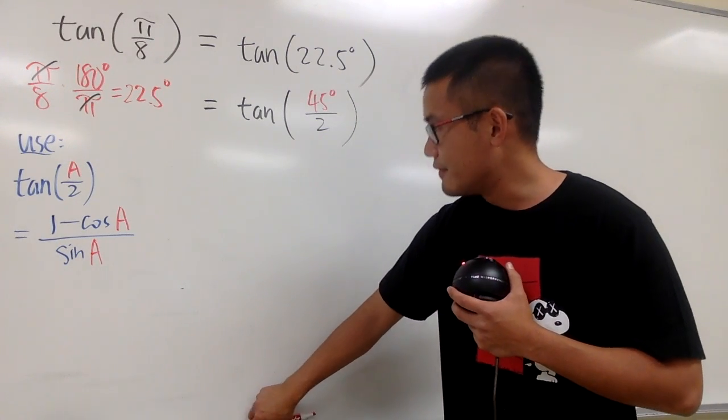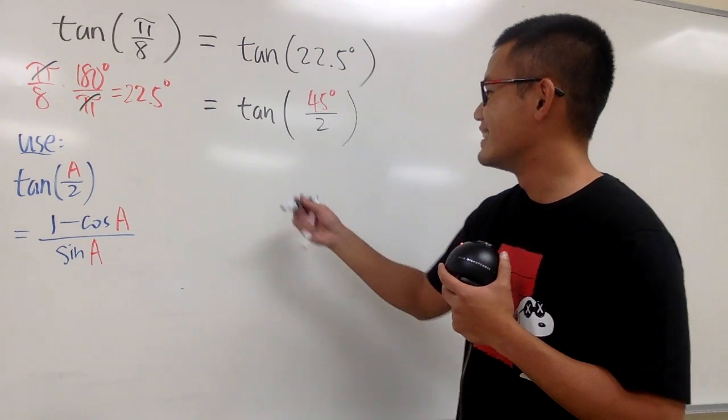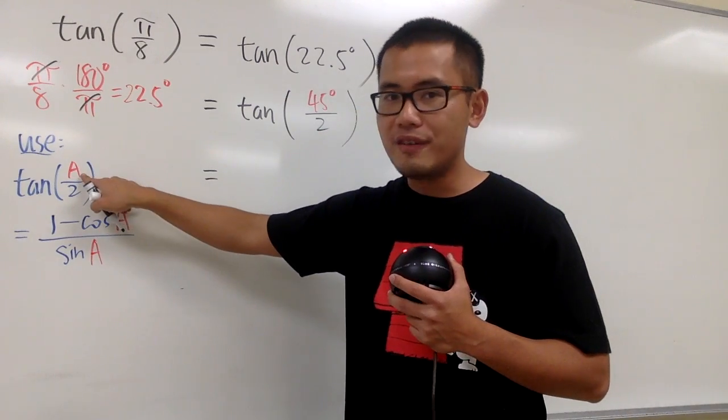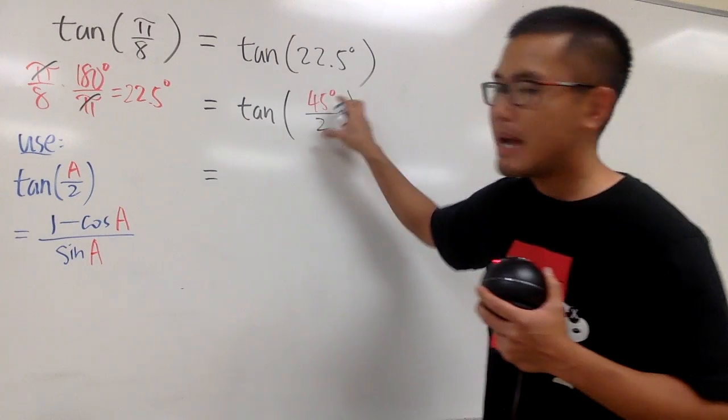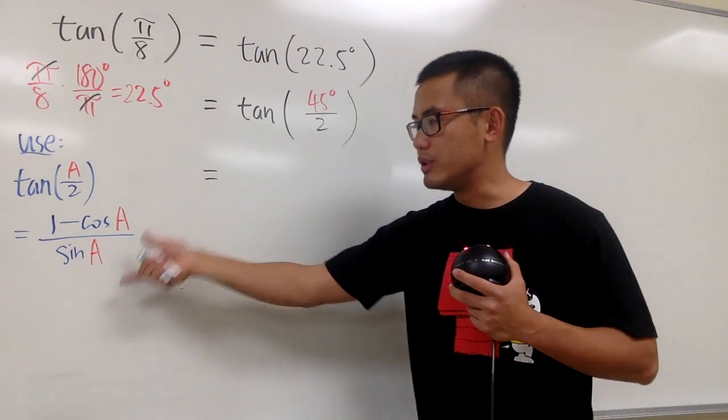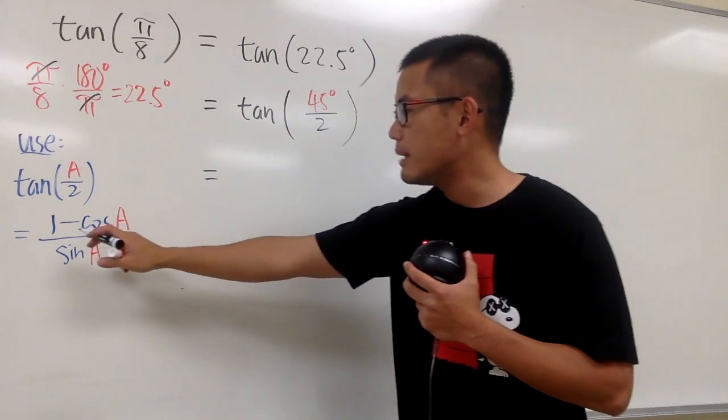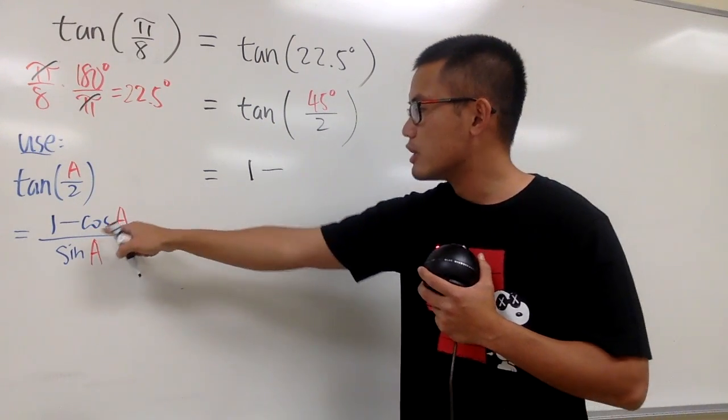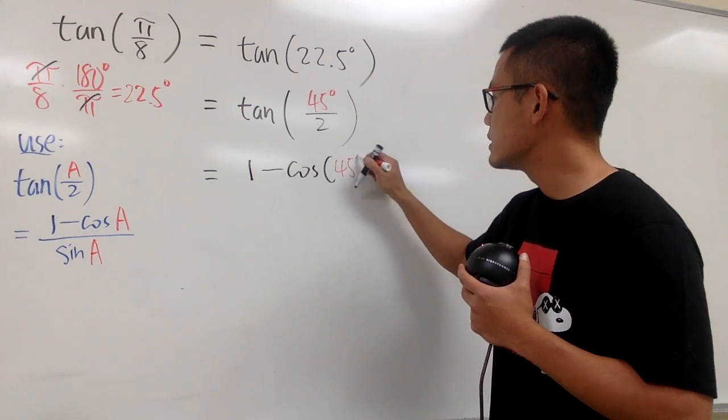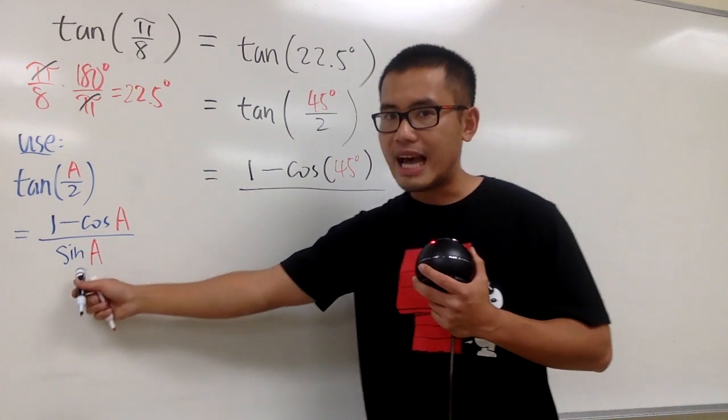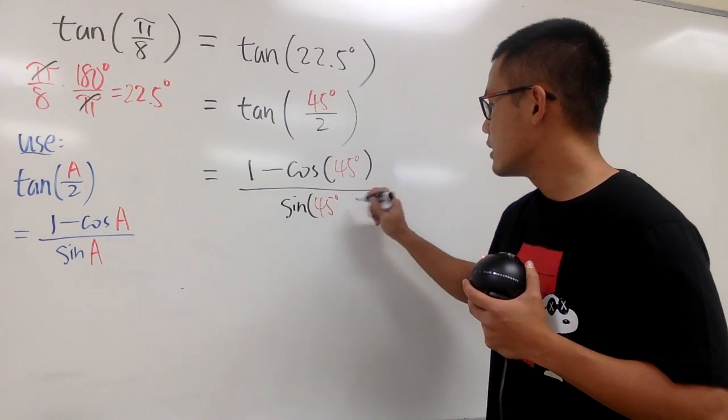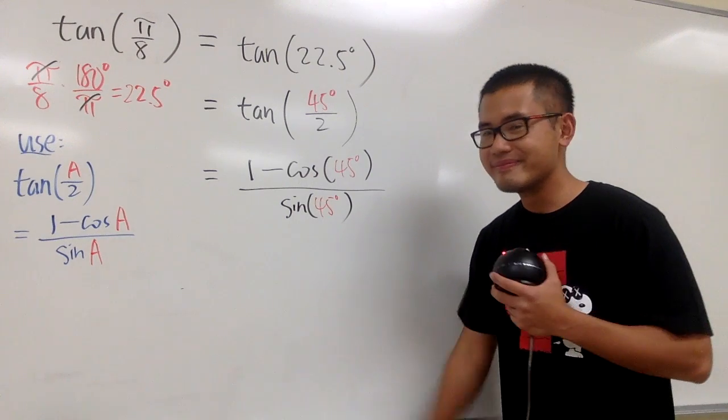Now I'll figure out the rest. The A in our case will be 45 degrees, so this and that match. I'll put this into the formula: 1 minus cosine of 45 degrees, over sine of 45 degrees.